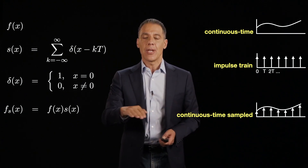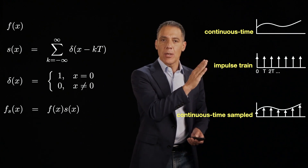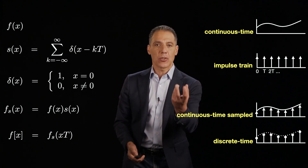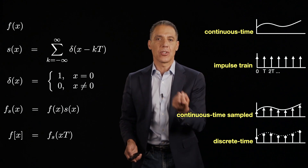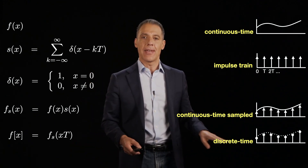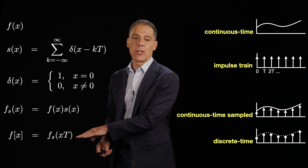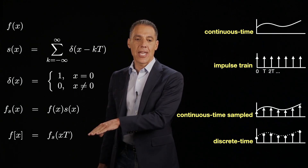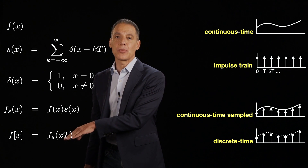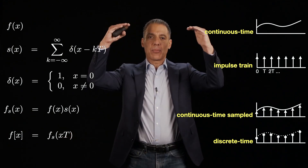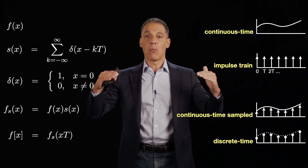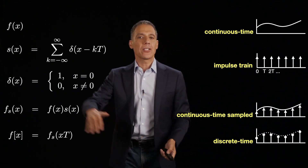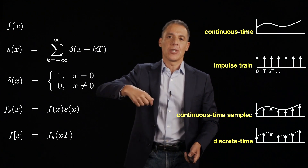So this signal grabs the values where I want them, but has 0s everywhere else. Then the last step is the actual discretization, where I just rip out those single values at 0, T, 2T, 3T, 4T. Now I have my discrete representation with square brackets, grabbing every T value. I take this continuous signal and just take the value associated with each integer multiple of T. This is the sampling process: continuous signal, continuous impulse train, multiply the two together, and then sample — take every sample that you want. And now we're back to where we started when talking about discrete-time signals and discrete-time systems.